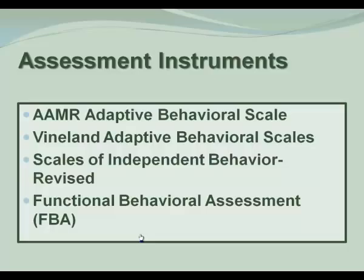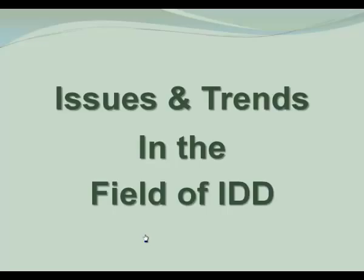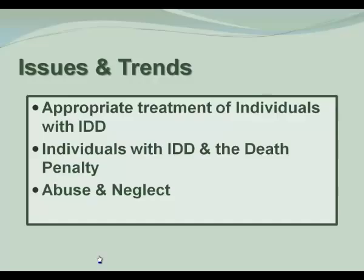Here are the names of some assessment instruments that are commonly used: the AAMR Adaptive Behavioral Scale, the Vineland, the Scales of Independent Behavior, and Functional Behavioral Assessment. The FBA is the one that gives us teaching information and direction for the levels of support, and issues and trends in the field of IDD.